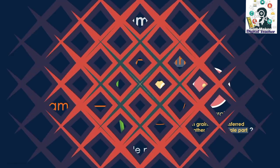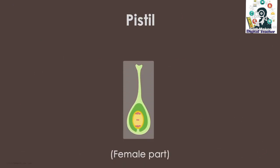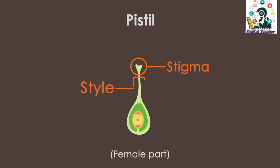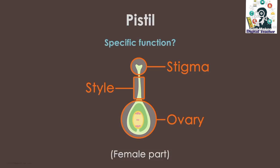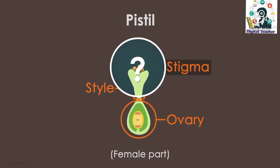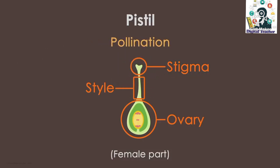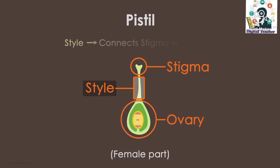That leads us to the next structure, which is the pistil. The pistil is the female part, and it consists of three different structures: the stigma, the style, and the ovary. The stigma is the landing point for the pollen grains, so pollen from the male part is transferred to the stigma in a process called pollination. The style is a slender stalk which holds the stigma in place and connects with the ovary.